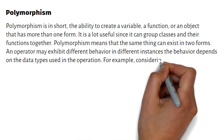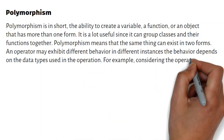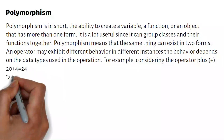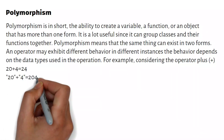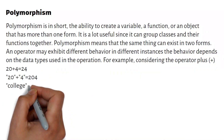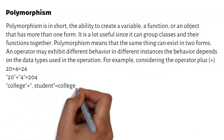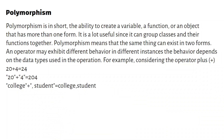For integers: 20 + 4 = 24. For strings: 20 + 4 equals 204. College + student equals college student.